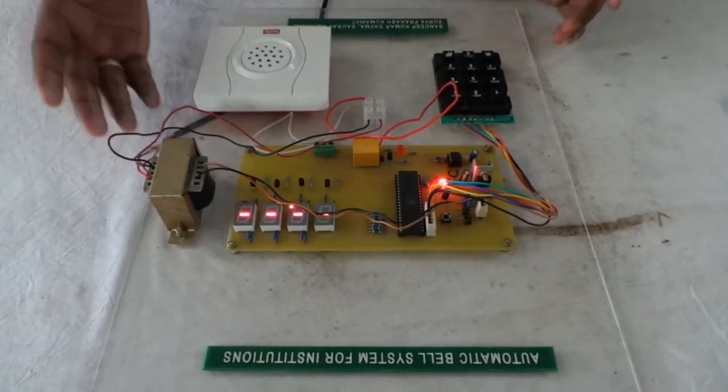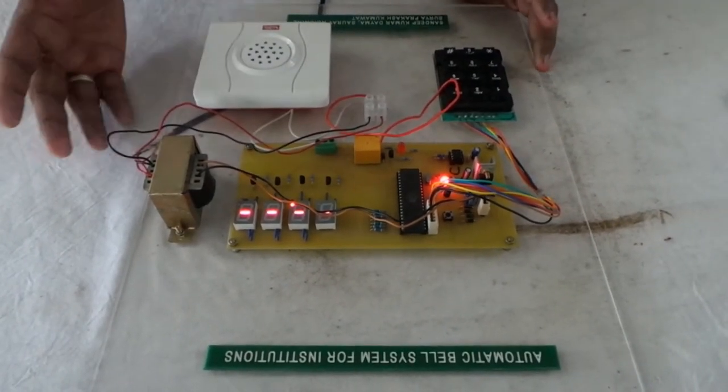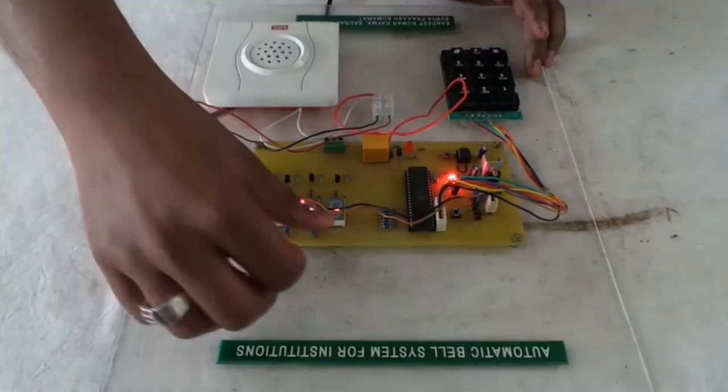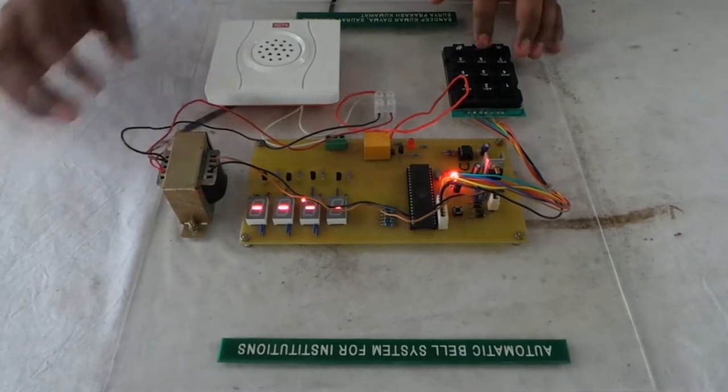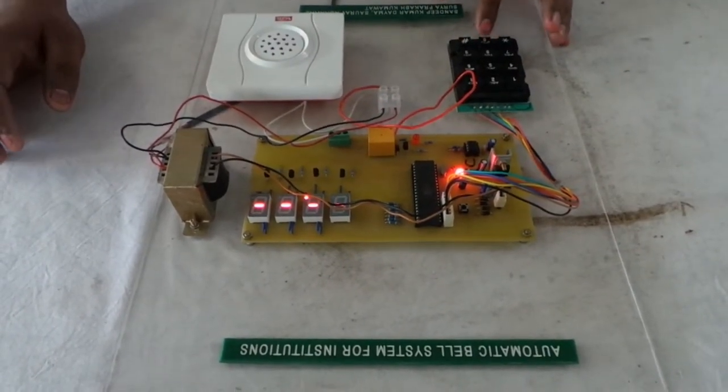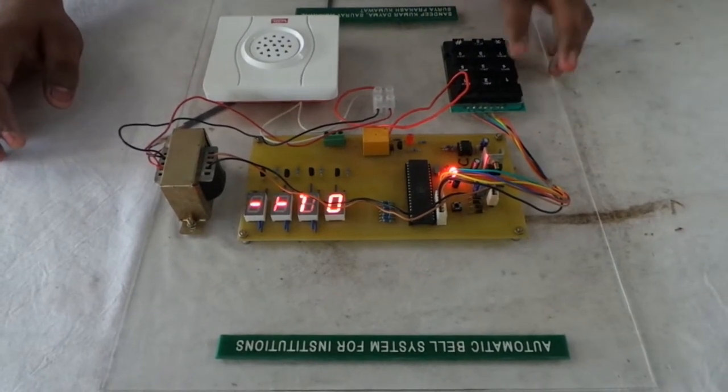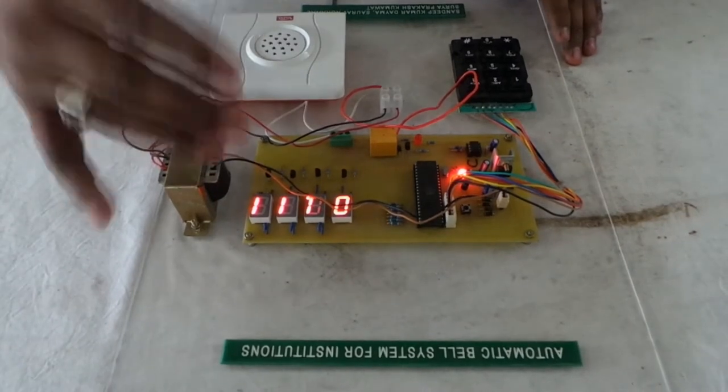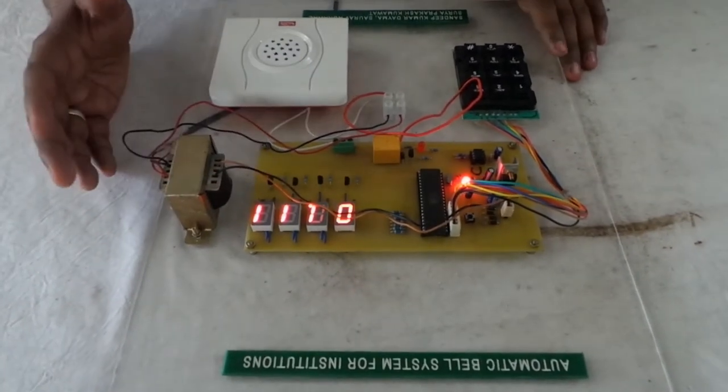We have used a bell in which we have set the bell. And the bell is ringing. We have used 7 segments. If you understand, we will reset it. This will be reset. After that, we will add a time for 1 hour. We will add 1 hour time. When it comes to time, the bell will be ringing.